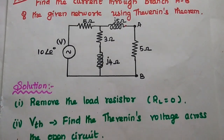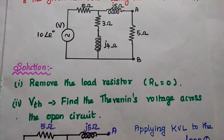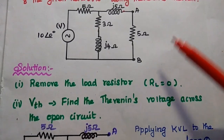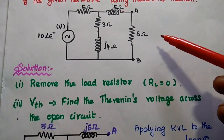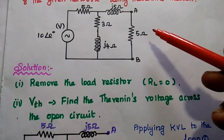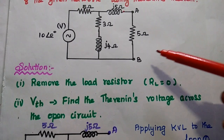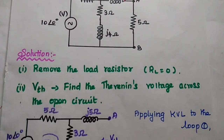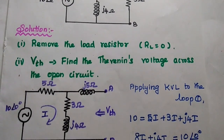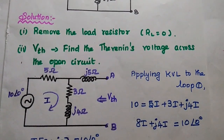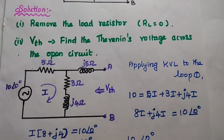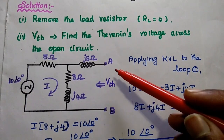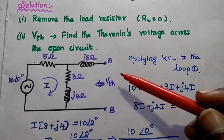We are going to use Thevenin's Theorem. In the solution, the first step is to remove the load resistor. The load resistor is the 5 Ohm resistor. We remove it and make these terminals as open circuit.